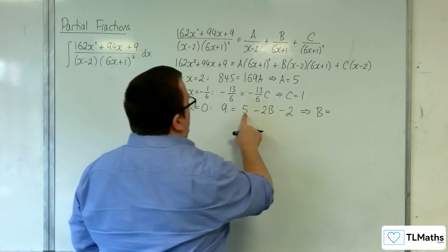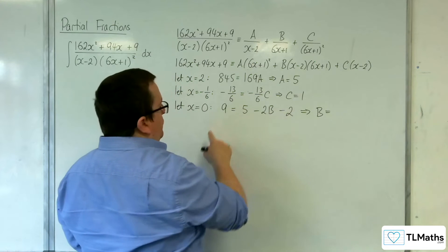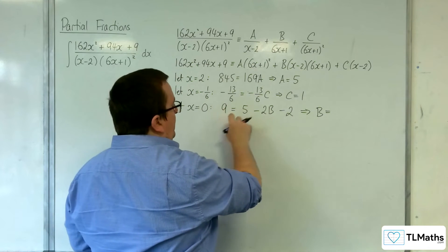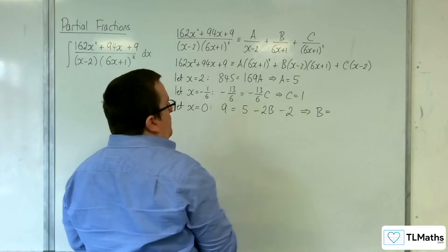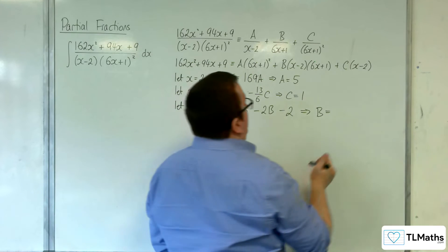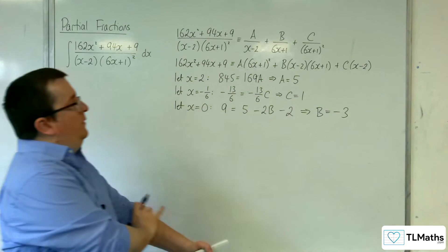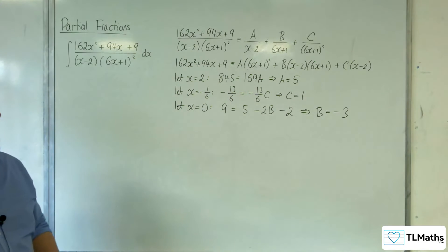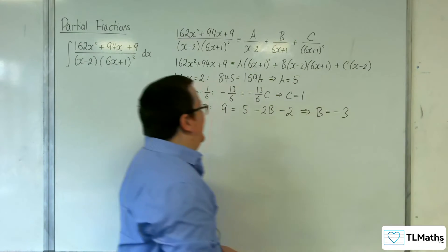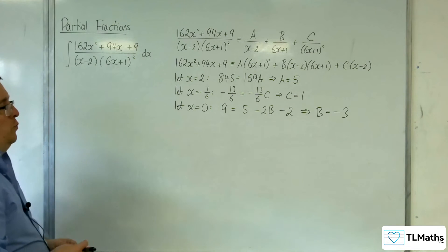Now we just need to solve this equation. 5 take away 2 is 3. Taking 3 from both sides gets us 6 equals minus 2B, so B equals minus 3. So in summary: A is 5, B is minus 3, and C is equal to 1.